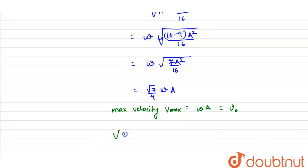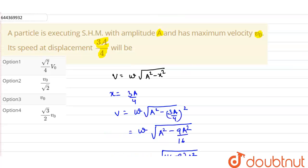Substituting the value we get V equals under root of 7 by 4 V0. So choosing out from the options, we see our option number 1 is correct.